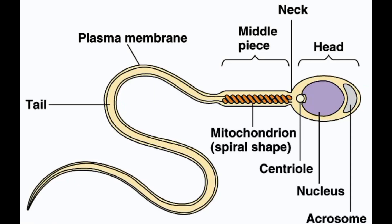In the context of sperm cells, the tail, also known as the flagellum, is a long, whip-like structure that extends from the midpiece of the sperm cell. The tail is responsible for the movement of the sperm and enables it to swim towards the female egg during fertilization. The tail is composed of microtubules and dynein, a type of motor protein that uses ATP to generate movement. As the dynein molecules move along the microtubules, they cause the tail to bend and twist, propelling the sperm forward in a swimming motion.